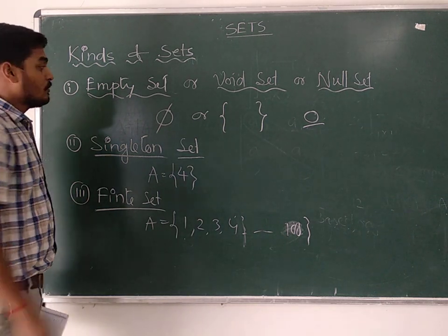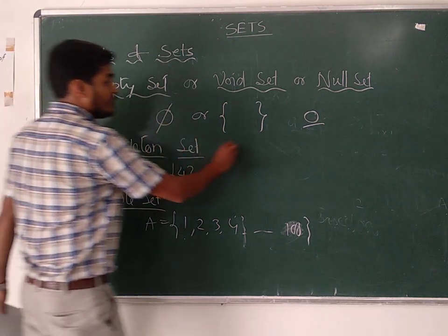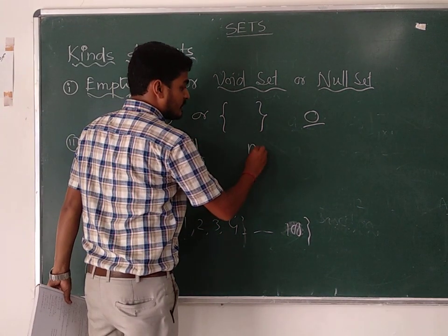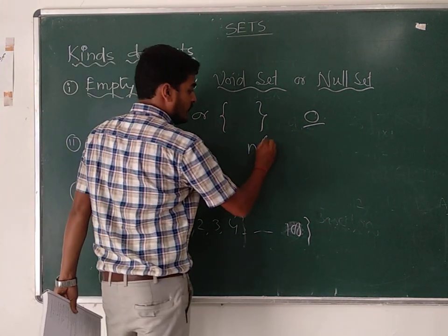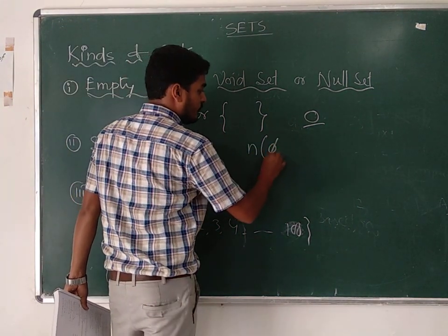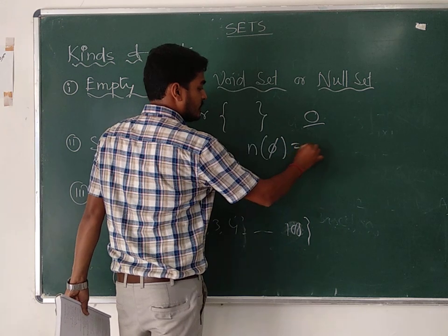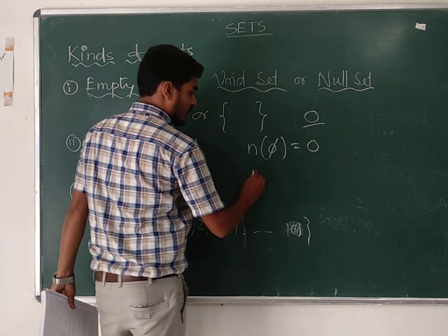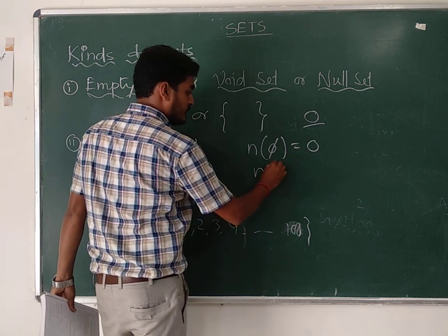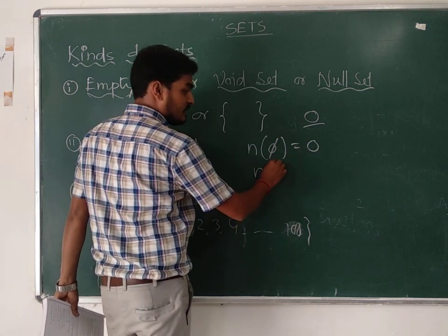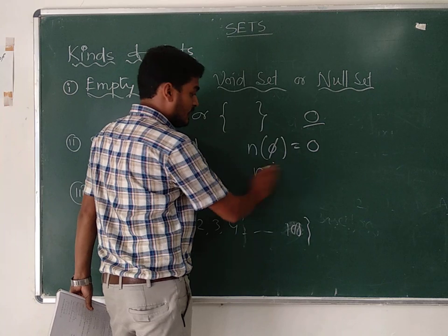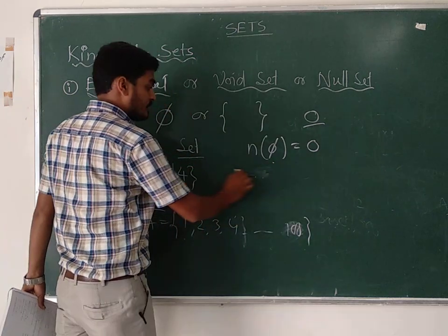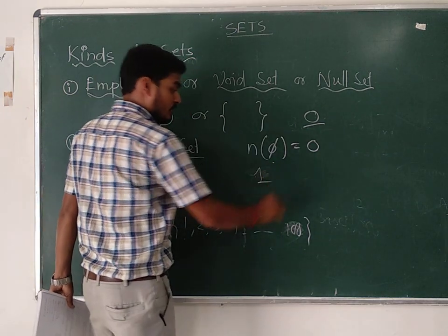Now, cardinality — which we discussed in previous lectures. Cardinality is the number of elements in a set. The cardinality of the empty set (φ) is equal to zero. The cardinality of a singleton set is always one.